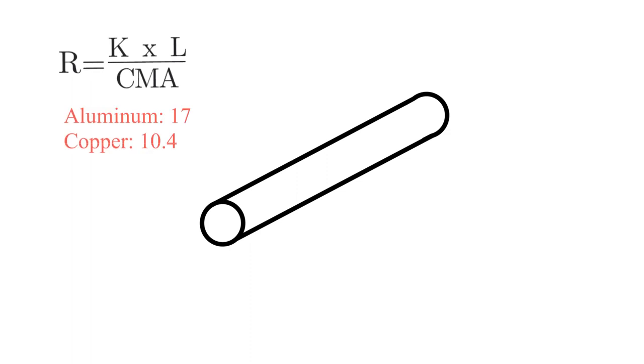So for our K, we're going to use either copper or aluminum. Those are our two most common types of conductors out there. For aluminum, that constant of resistivity is 17. For copper, it is 10.4.